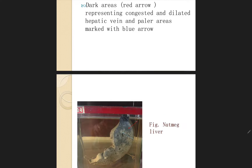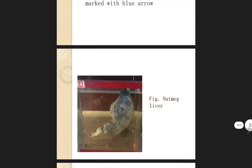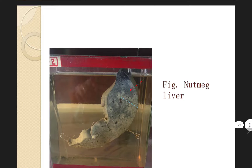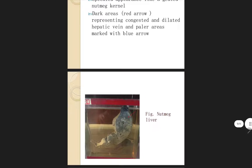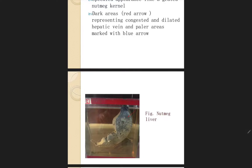The dark areas indicated by the red arrow represent the congested and dilated hepatic vein, and the paler areas are marked with the blue arrow. So the dark areas correspond to the red arrow and pale areas to the blue arrow. The hepatic vein is dilated and congested — that was about the nutmeg liver.